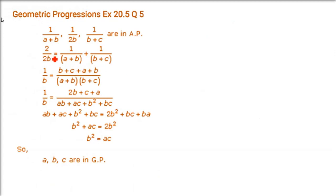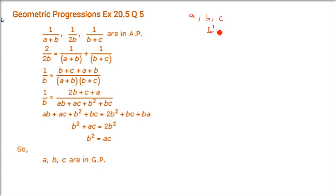If 1/(A+B), 1/2B, 1/(B+C) are three consecutive terms of an AP, we have to prove that A, B, C are three consecutive terms of a GP. If A, B, C are in GP, we have to prove B² = AC.